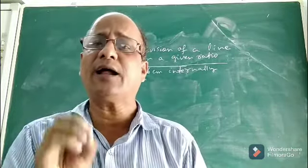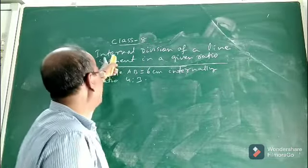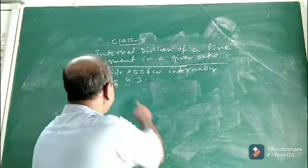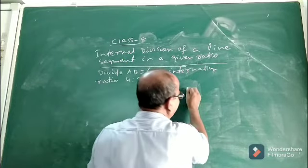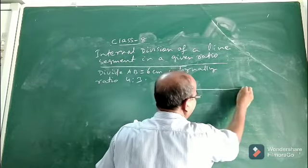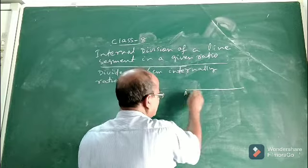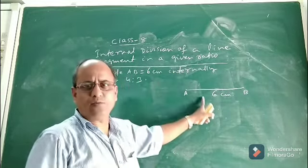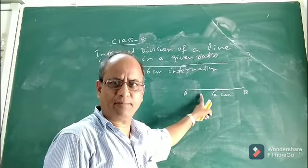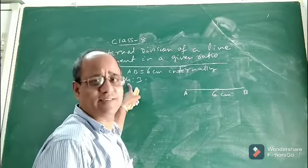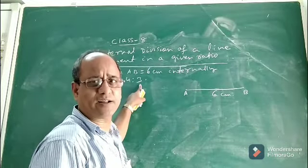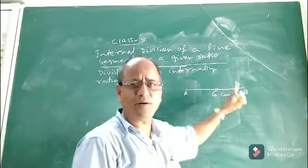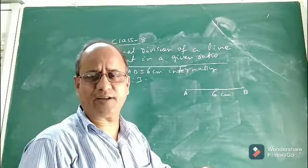What is the meaning of internal division of a line segment in a given ratio? Suppose you are given a line segment AB whose length is 6 cm. We want to divide this line segment AB, whose length is 6 cm, in the ratio 4 is to 3. What is the meaning of dividing a line segment internally in a given ratio?